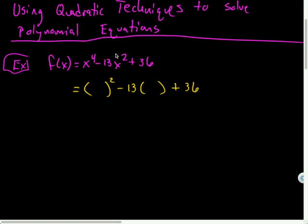Now, this is what I mean by that. I'm saying what if we pretend this was something squared minus 13 times something plus 36? So I want to imagine it as a quadratic. So if I imagined it as a quadratic, what would have to go in those parentheses to make it equal to the equation above it? X squared.